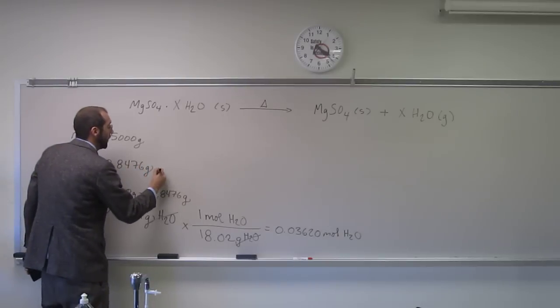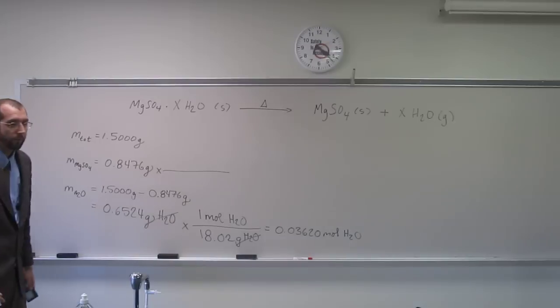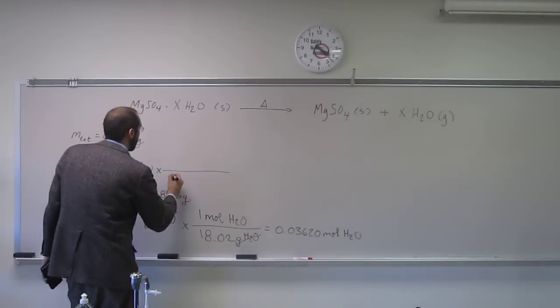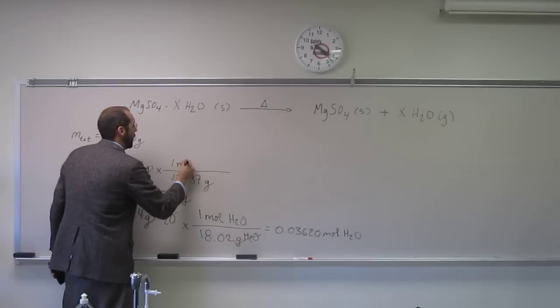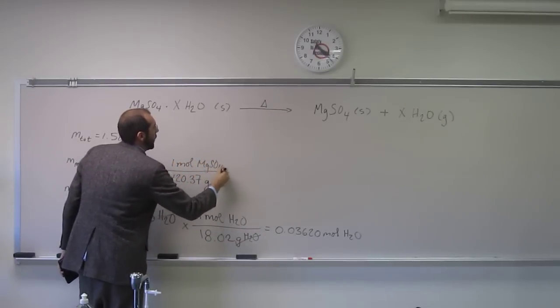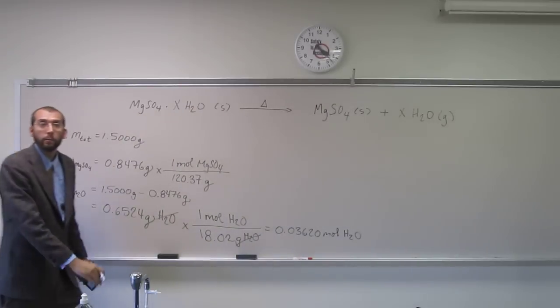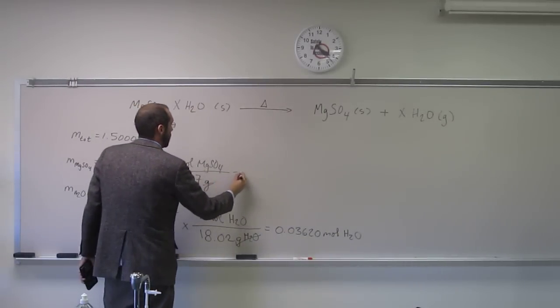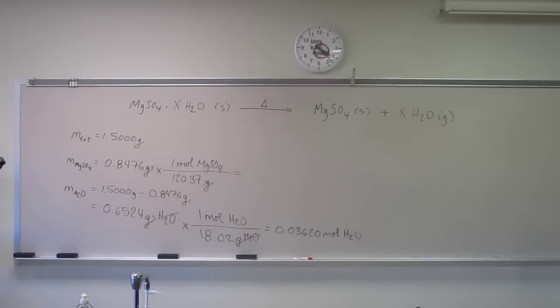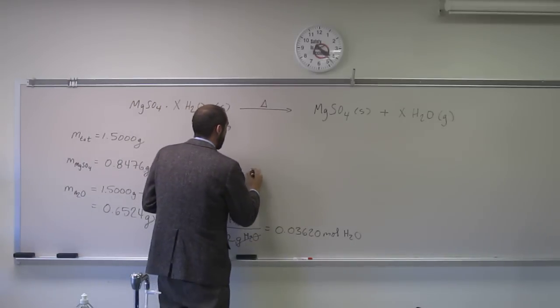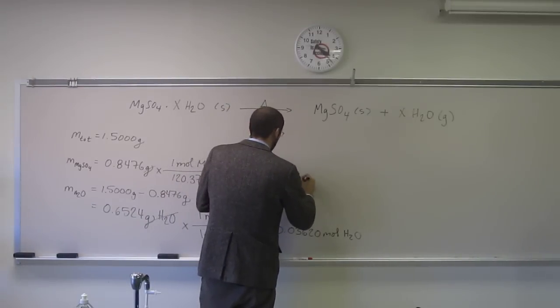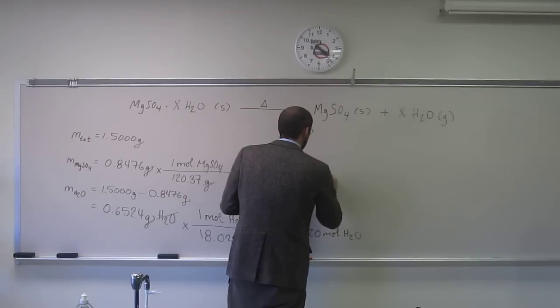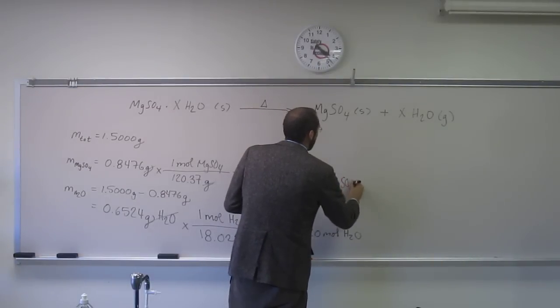So here I multiply by the magnesium sulfate. And I calculated it earlier, it's 120.37. So that's just that there, right? So when I do that, I get 0.007042 moles of magnesium sulfate.